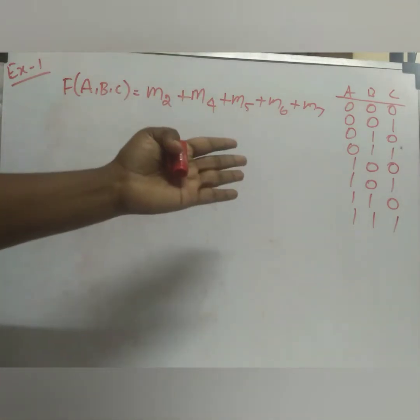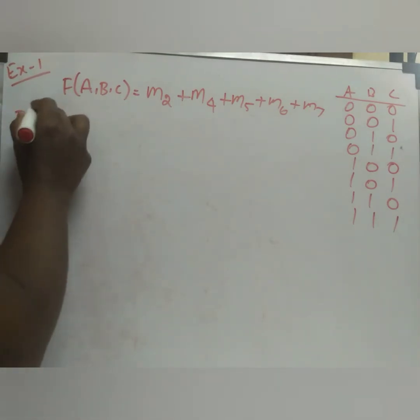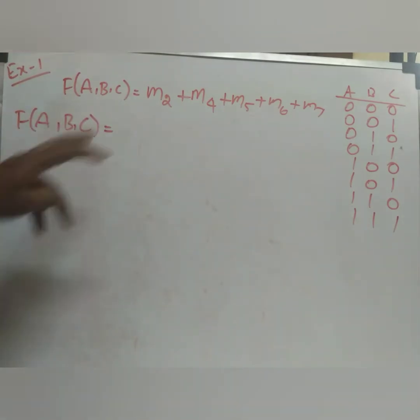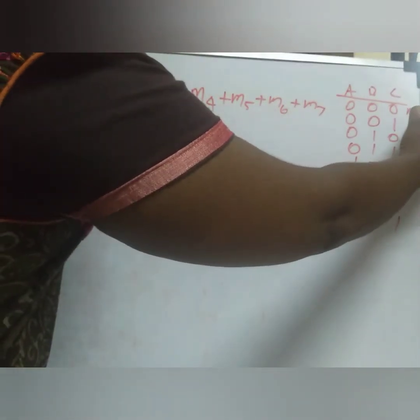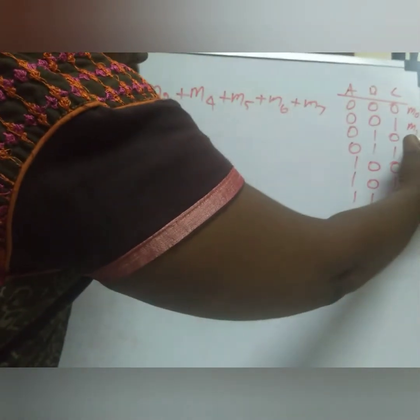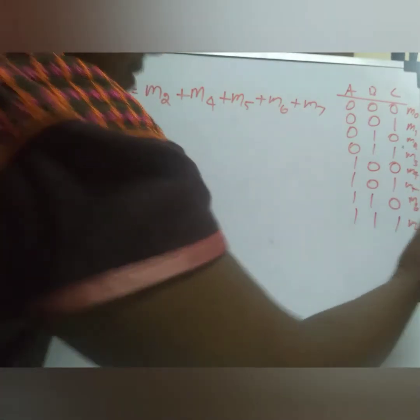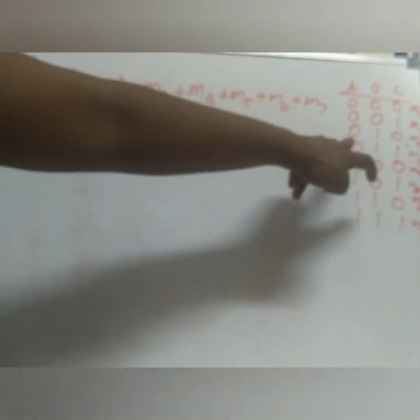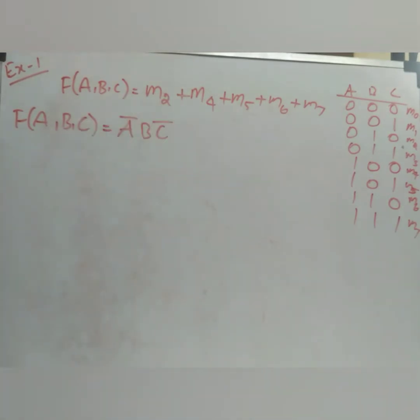This is our truth table. Now, the given function F(A, B, C) = Σm(2, 4, 5, 6, 7). We number each row as min term 0 through 7. Min term 2 corresponds to row A=0, B=1, C=0, so its expression is A̅BC̅. Min term 4 is A=1, B=0, C=0, giving AB̅C̅.